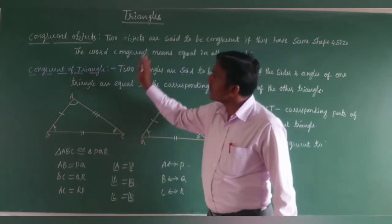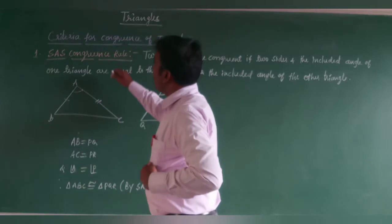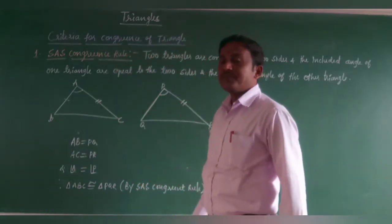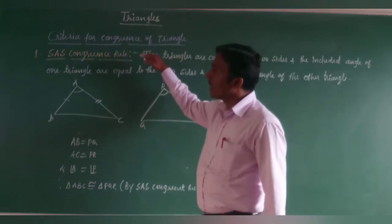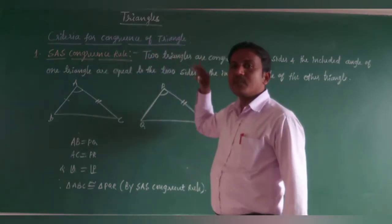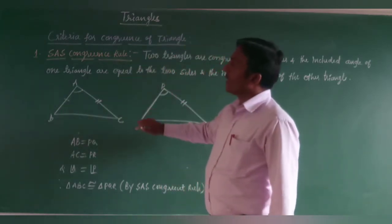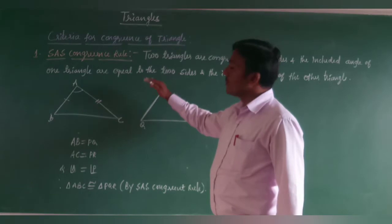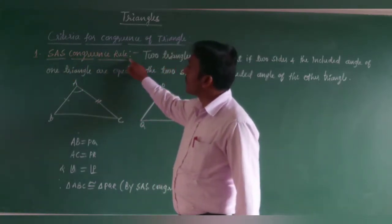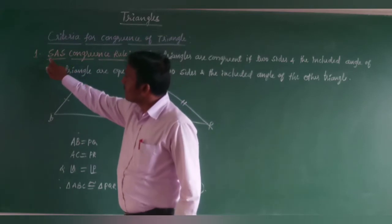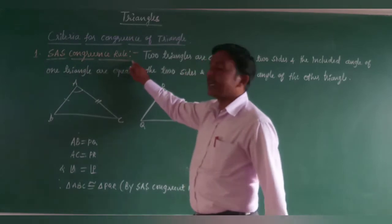Now I will discuss some criteria for congruence of triangles. We already learned these criteria in 7th standard, but we need to discuss them again. By using these criteria, we will solve some questions. The first one is the SAS congruence rule. SAS stands for Side-Angle-Side.